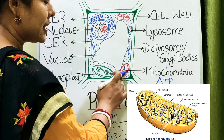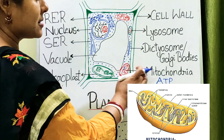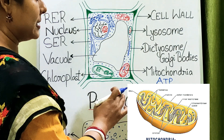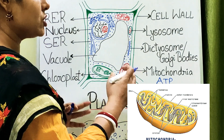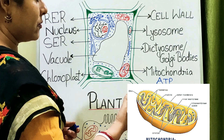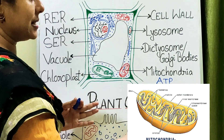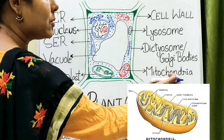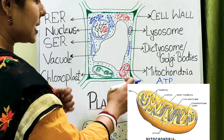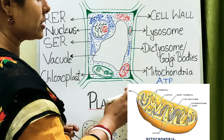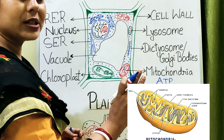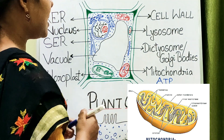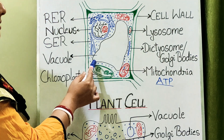Because mitochondria have their own DNA and ribosomes, the mitochondria is known as a semi-autonomous organelle. Semi-autonomous means it can divide and increase its number depending upon its requirement in the cell. A common exam question asks to name a semi-autonomous organelle — the answer is mitochondria.